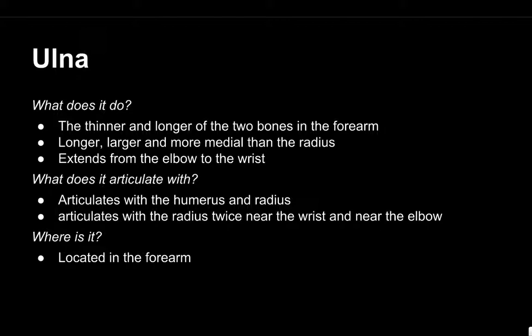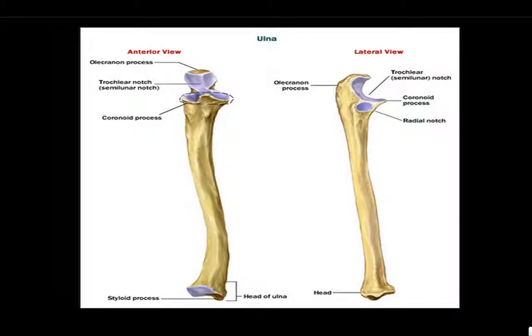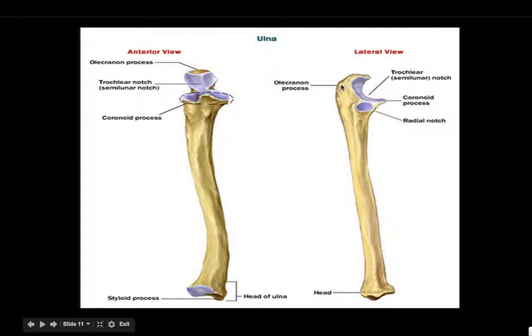The ulna is the thinner of the two bones in the forearm. It is longer and more medial than the radius, and extends from the elbow to the wrist. It articulates with the humerus and the radius — with the radius twice, near the elbow and also near the wrist. It is located in the forearm.